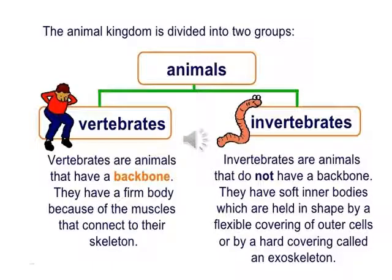The animal kingdom is basically divided into two groups: vertebrates and invertebrates. Vertebrates are animals that have a backbone; they have a firm body because of the muscles that connect to their skeleton. Invertebrates are animals that do not have a backbone; they have soft inner bodies which are held in shape by a flexible outer covering.